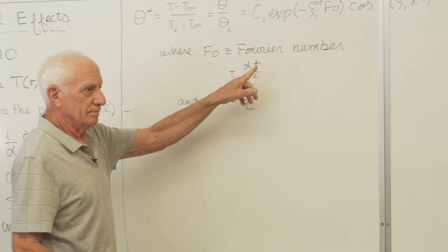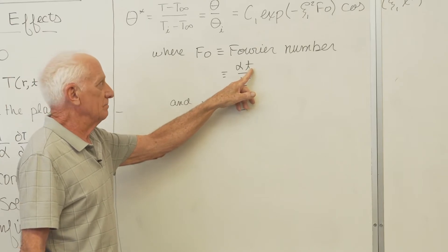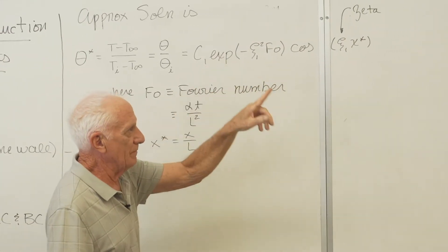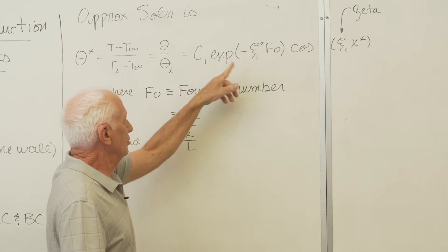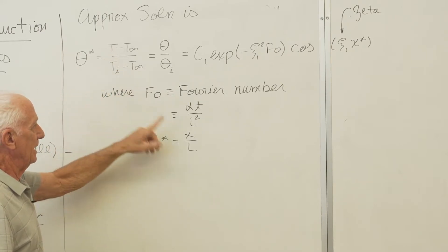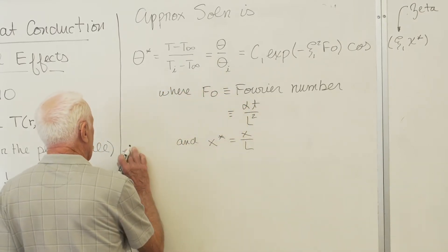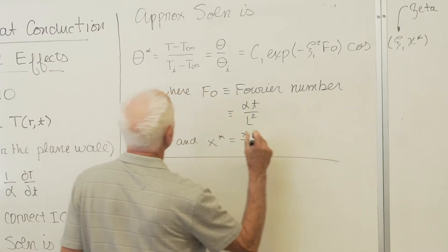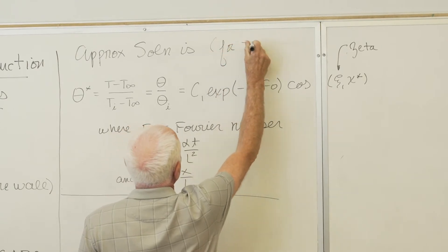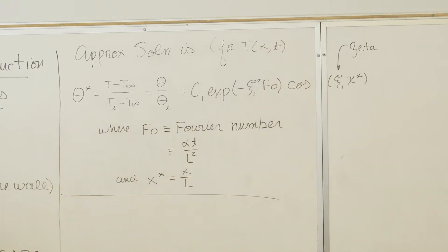You give me a time — say 1,000 seconds — put it in, get the Fourier number, get ζ₁ and C1 from the table, and do what it says. I know T-infinity and T-initial typically, and I solve for the temperature at that X value and that time. So that's how we solve for T as a function of X and time.